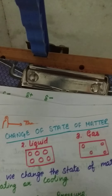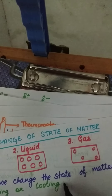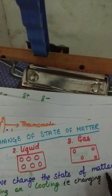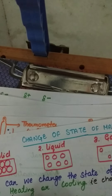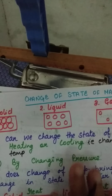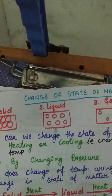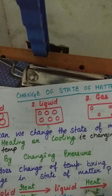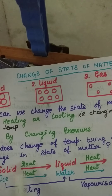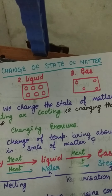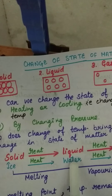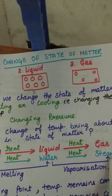When we say heating or cooling, it means we are changing the temperature. If we heat, then temperature increases; if we cool, the temperature of the substance decreases. On heating, solid changes to liquid and liquid changes to gas. For example, ice on heating changes to water, water on further heating changes to steam.